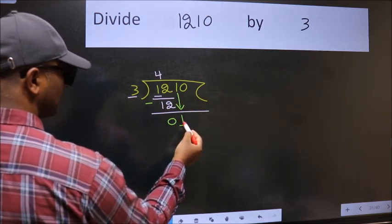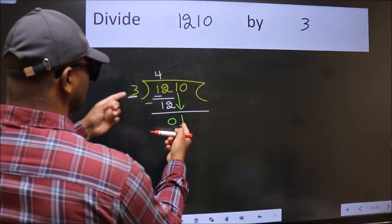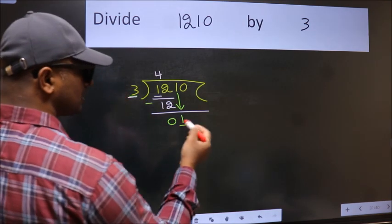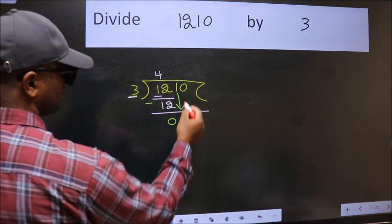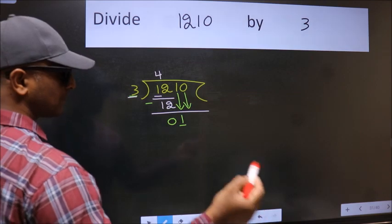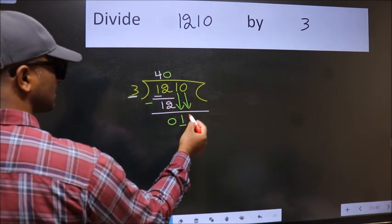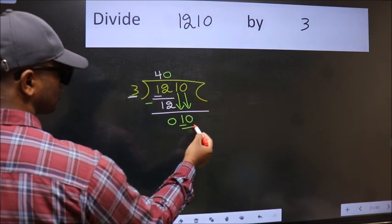Now, here we have 1 and here 3. 1 is smaller than 3, so we should bring down the second number. And the rule to bring down second number is put 0 here. Then only we can bring this number down.